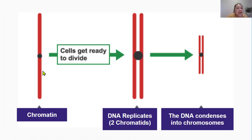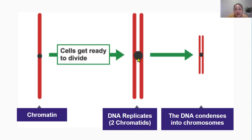This picture shows how chromatin is longer and starts off with just one copy. Then as cells get ready to divide, DNA replication happens, and one chromatin becomes two chromatids — identical copies of each other, bound together by the centromere. Then just before cell division begins, the DNA condenses and becomes more tightly packed, and at this point we call it a chromosome.